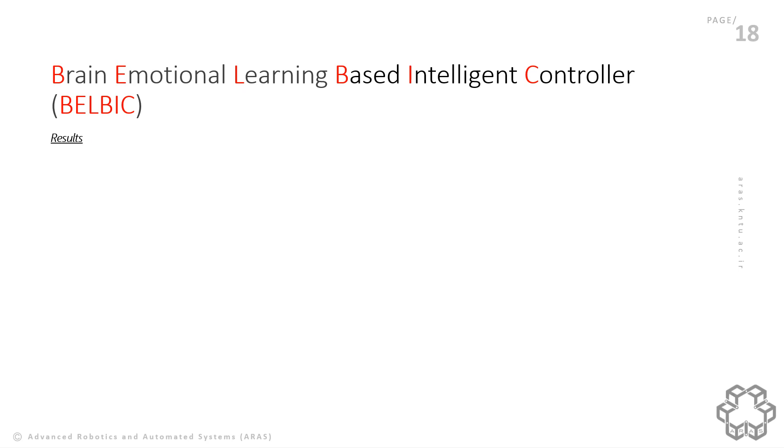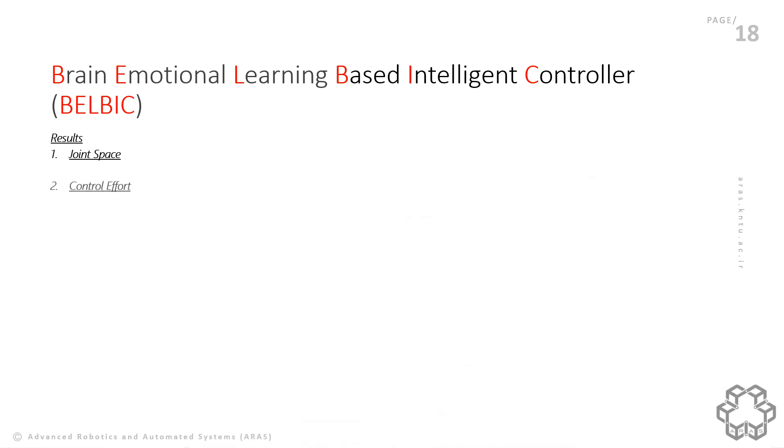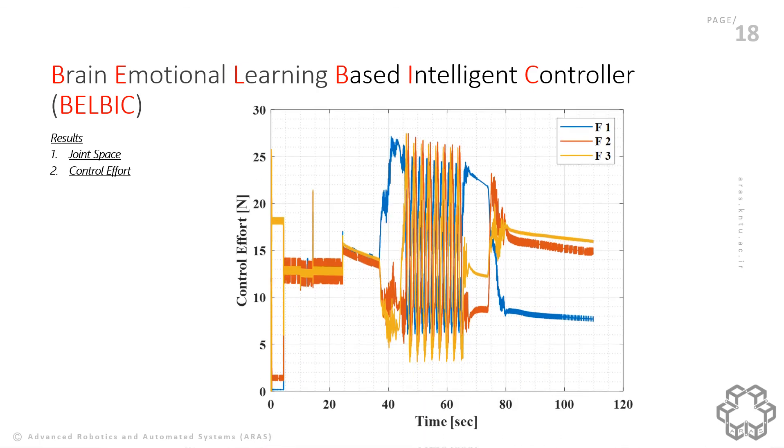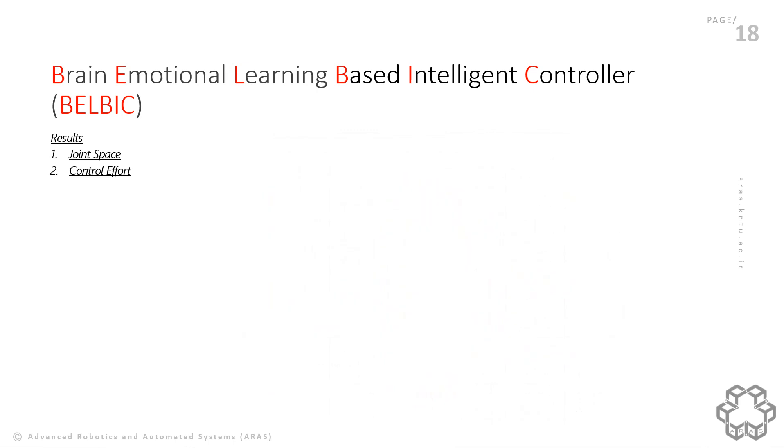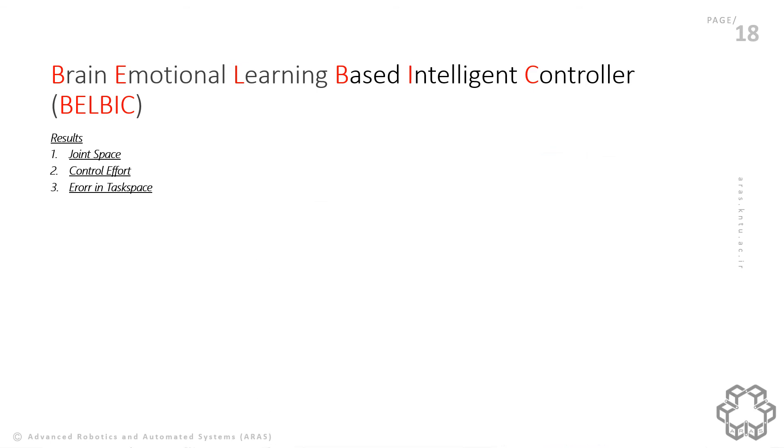The desired trajectory in joint space and actual angle of the joints are shown in the first part. As you can see, measured theta are relatively close to desired ones. In the second figure, you can see the control effort which remains positive along the simulation, but there's a little chattering on the signal. And finally, the third one is the error in task space which is close to zero with only a minus two millimeter error.